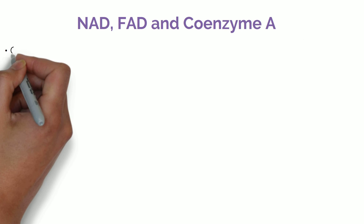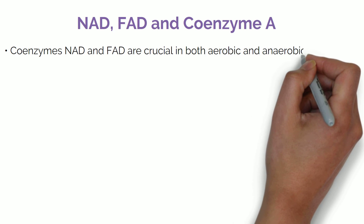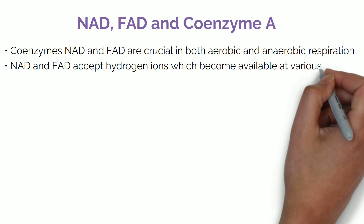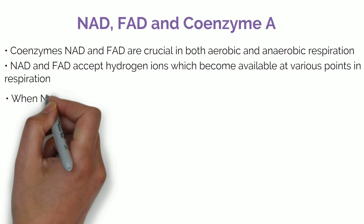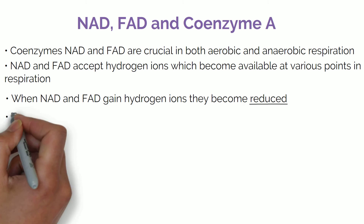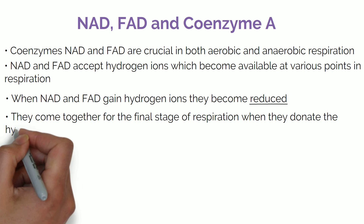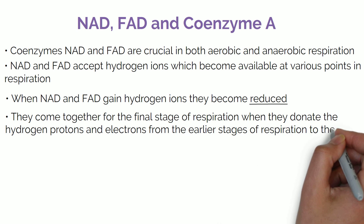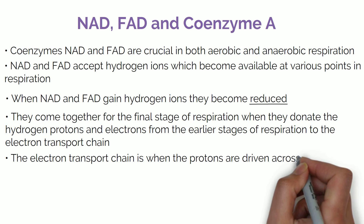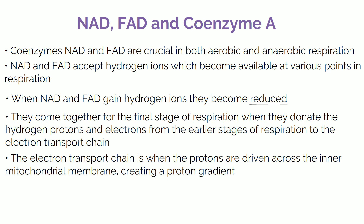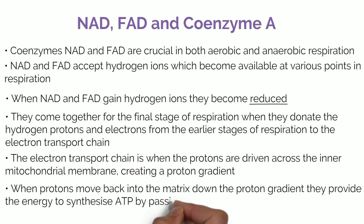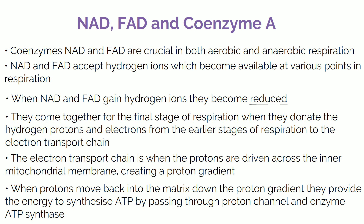Coenzymes NAD and FAD are crucial in both aerobic and anaerobic respiration. NAD and FAD accept hydrogen ions which become available at various points in respiration. When NAD and FAD gain hydrogen ions they become reduced. They come together for the final stage of respiration when they donate the hydrogen, protons and electrons from earlier stages to the electron transport chain, where protons are driven across the inner mitochondrial membrane creating a proton gradient. When protons move back into the matrix down the proton gradient, they provide the energy to synthesize ATP by passing through proton channels and enzyme ATP synthase.